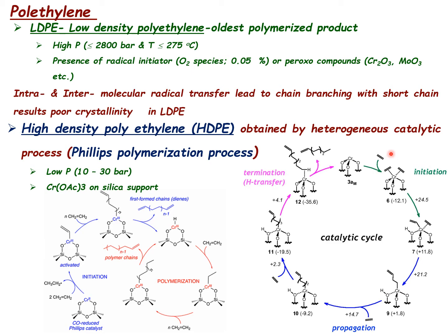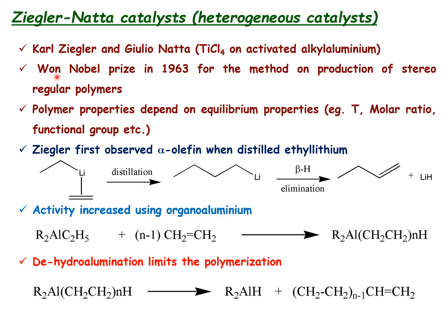The chromium center with vacant sites coordinates the olefin, forming a cyclic intermediate, and ring cleavage leads to a propagated chain. Further olefin insertions continue the polymerization process. Termination occurs by beta-hydride elimination, which gives an alpha-olefin product and regenerates the catalyst. This is the high-density polyethylene (HDPE) process using the Phillips polymerization catalyst, which is based on chromium acetate on silica support — a heterogeneous catalyst operating at 10–30 bar pressure at relatively low temperatures compared to the peroxide process.